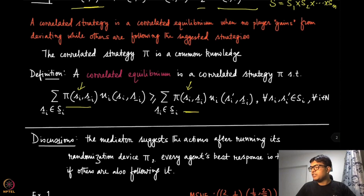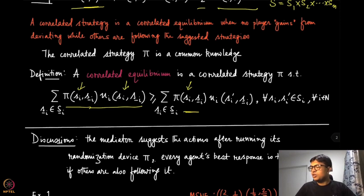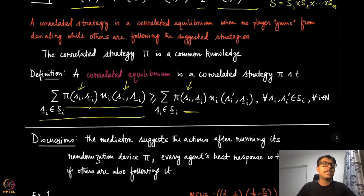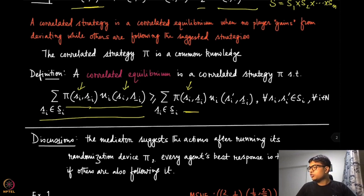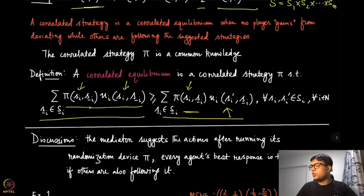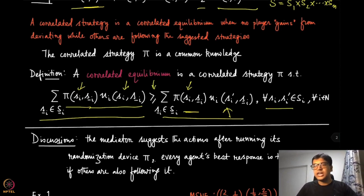On the left-hand side, you compute the expected utility when following si, summing over all s_{-i} weighted by pi. You do not know what was suggested to other players, so you take the expectation. You also compute the expected utility when deviating to si prime. The correlated equilibrium condition says you are never better off deviating, and this inequality must hold for all si, si prime, and all players i.